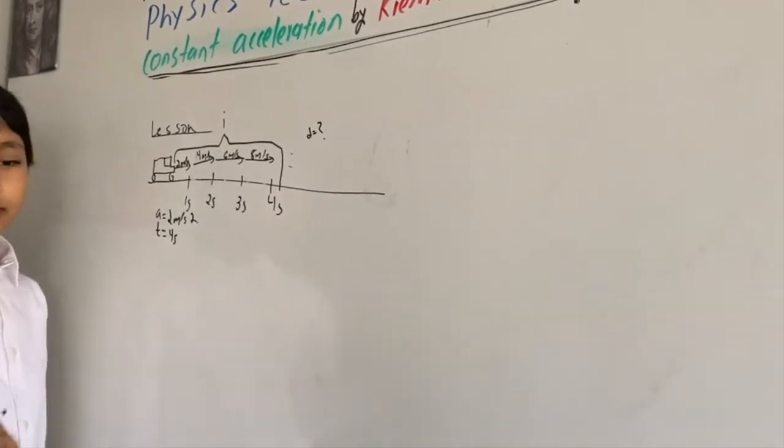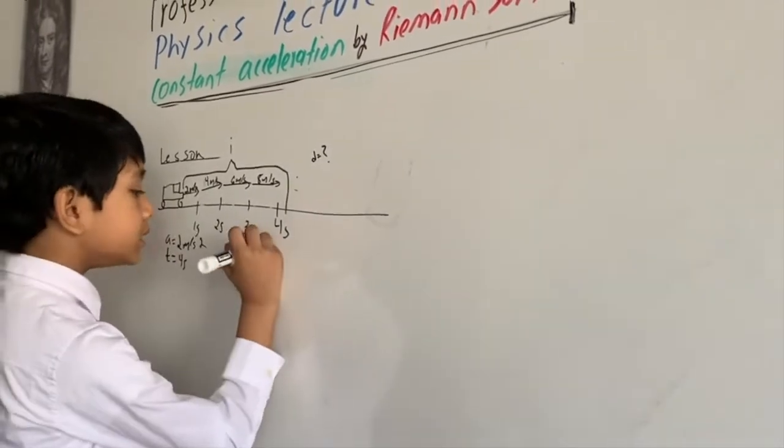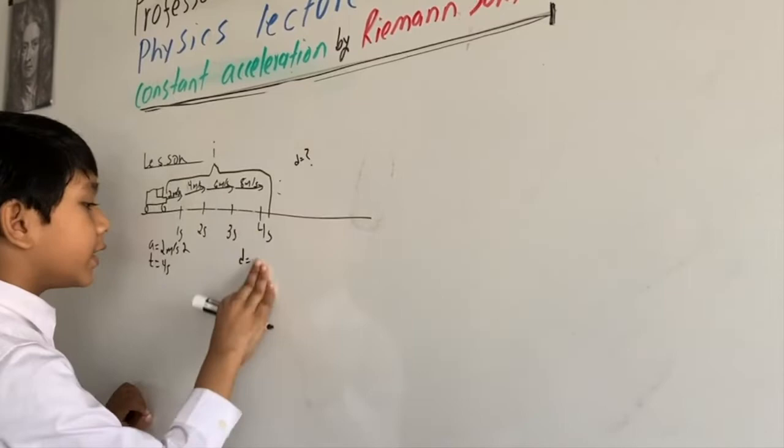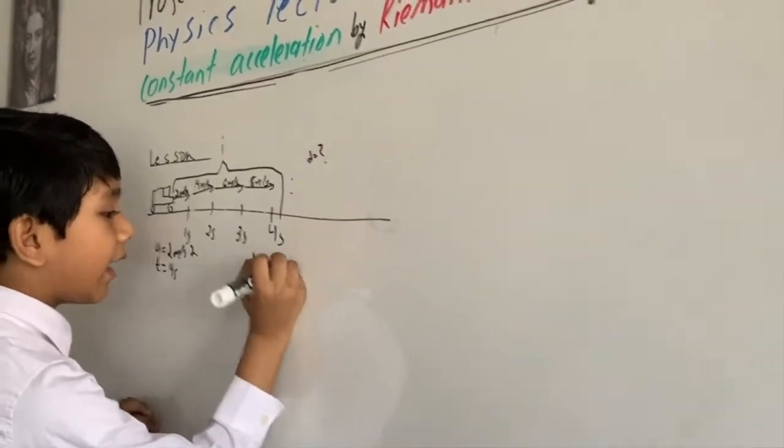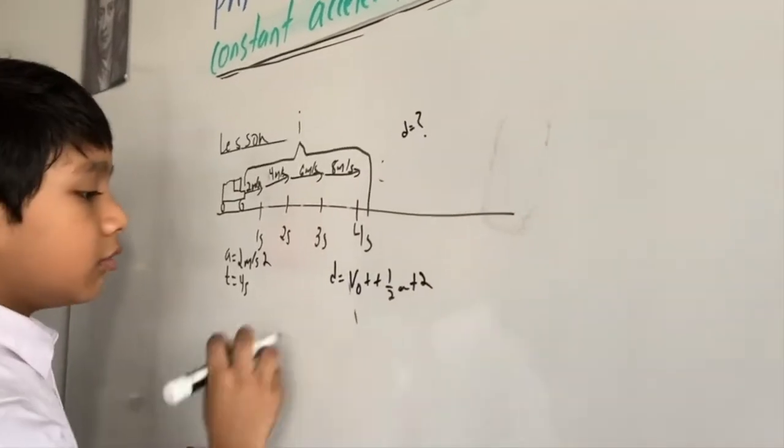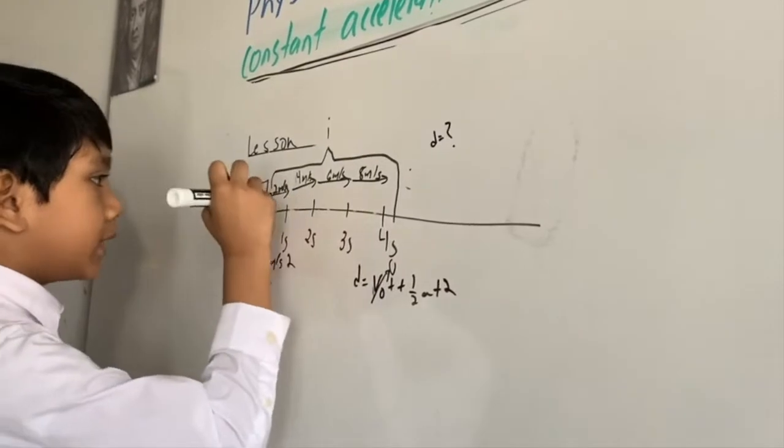We can use the kinematics equation d = v₀t + ½at² to solve this problem. So if we set v₀ to zero, which it is, then we get d = ½at².